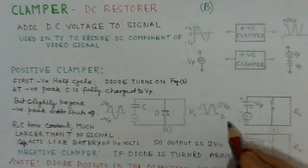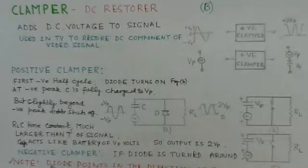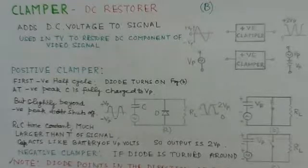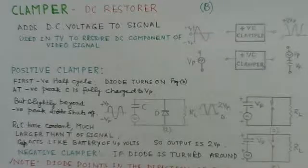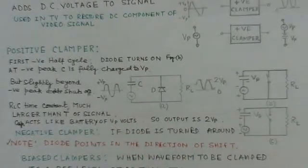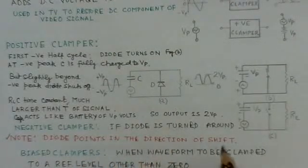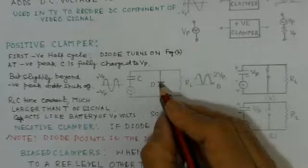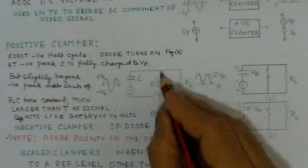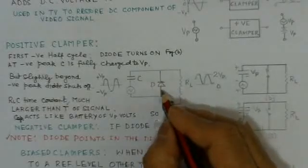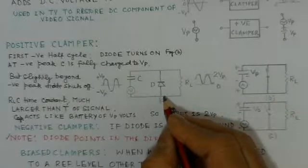Negative clamper: if the diode is turned around then now you can have a negative clamper. One thing which is very important here is to note that in this case the diode points in the direction of the shift. That means here this is the direction of the diode here, and that means if this is the direction of the diode, then for this clamper circuit it will shift the waveform up.